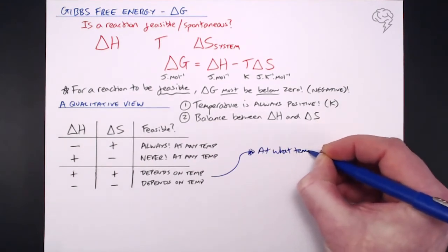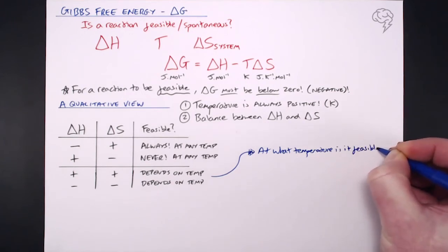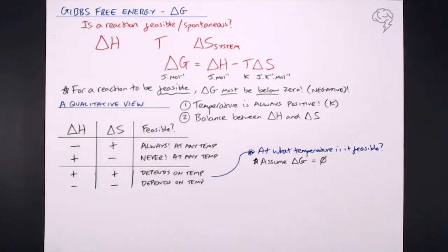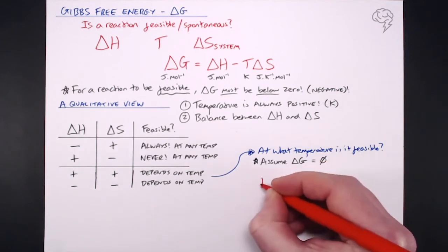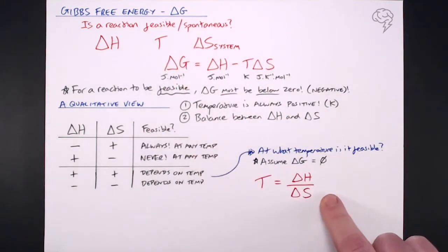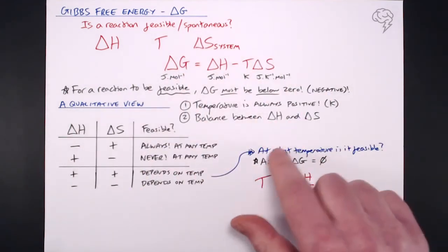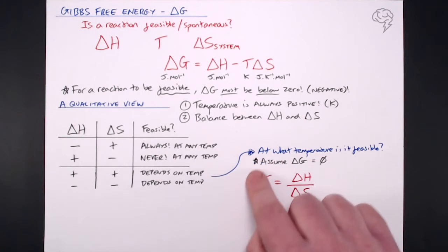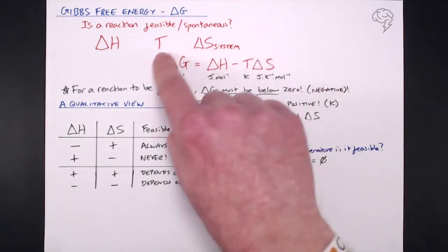We can rearrange the equation to find out at what temperature the reaction becomes feasible. If we assume delta G equals zero and eliminate it from the equation, we can find the balance between delta H, temperature, and delta S. The temperature at which delta G becomes zero equals delta H divided by delta S. This rearrangement is just as useful — there are many exam questions asking at what temperature a reaction becomes feasible.